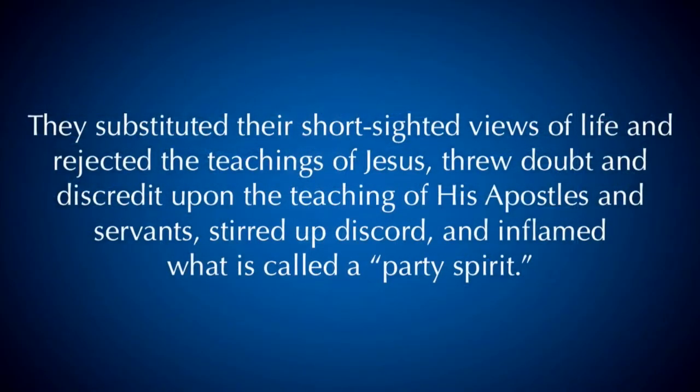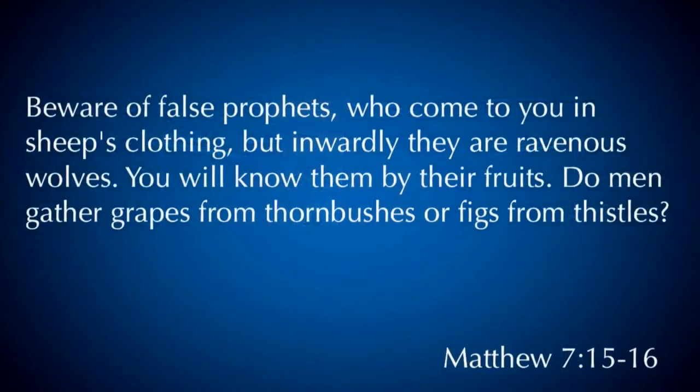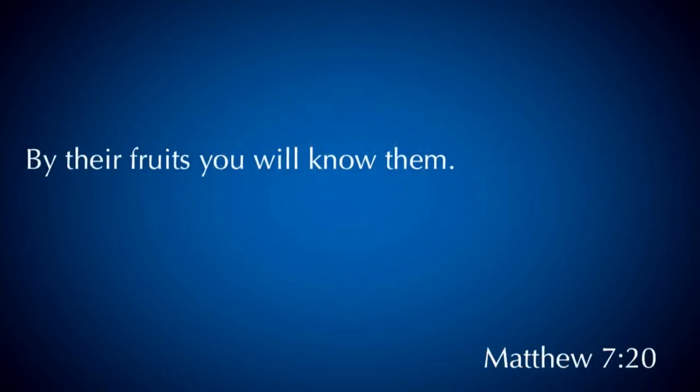Paul is beginning to outline the traits of the false teachers, exposed by the rejection of good doctrine. They substitute their short-sighted views of life, reject the teachings of Jesus, throw doubt and discredit upon the teaching of his apostles, stir up discord, and inflame a party spirit. He's beginning to speak concerning their fruit. Jesus said that false teachers produce certain fruit that would identify them. In Matthew 7:15-16, he said, 'Beware of false prophets who come to you in sheep's clothing, but inwardly they are ravenous wolves. You will know them by their fruits.' And in Matthew 7:20, 'By their fruits you will know them.'